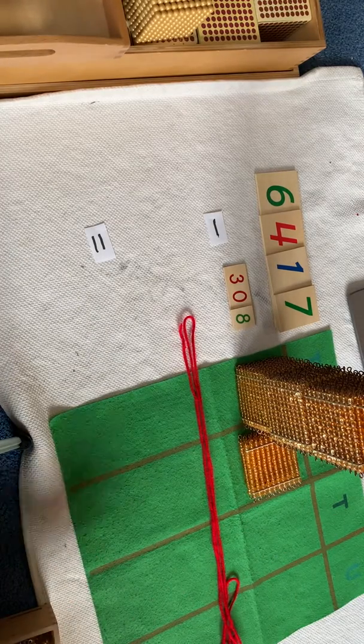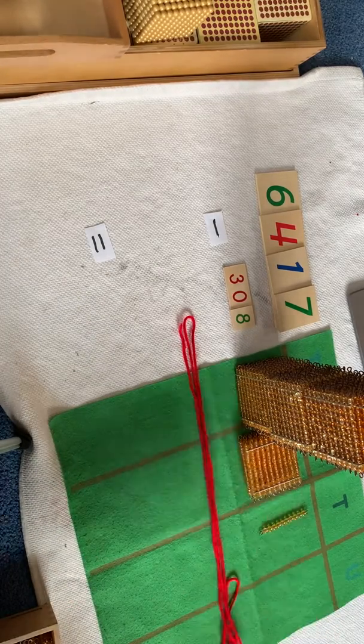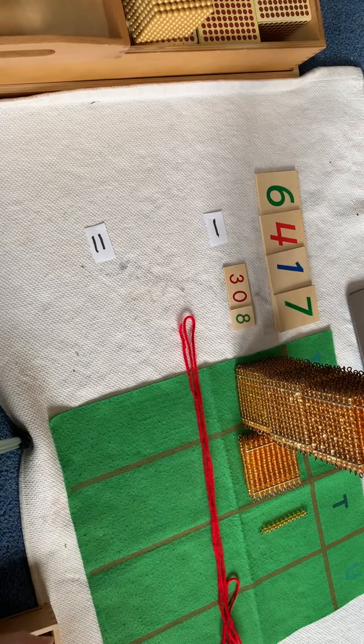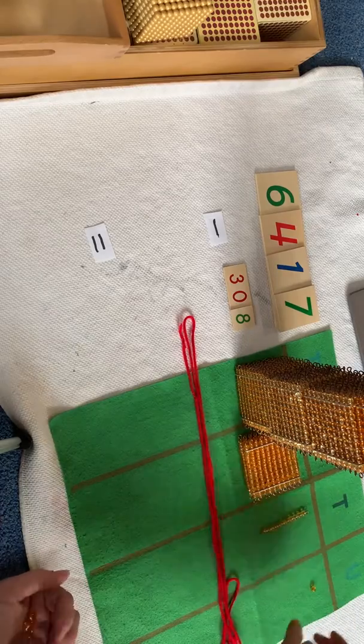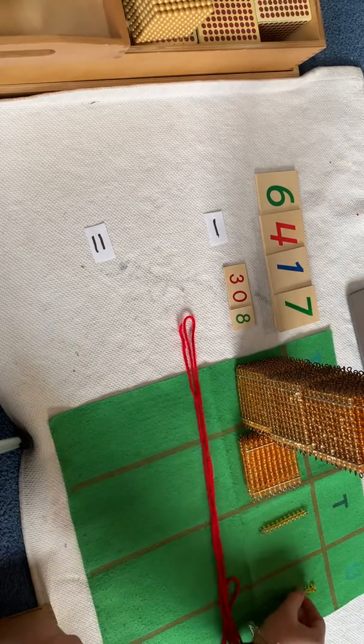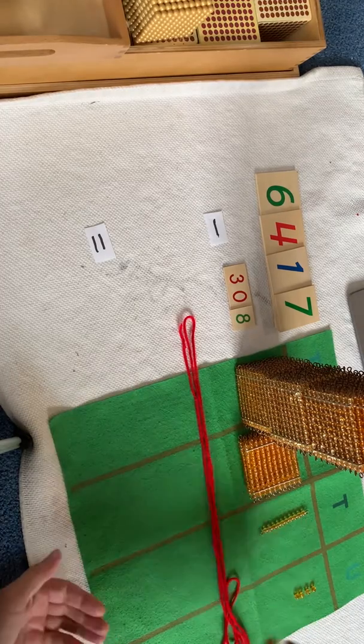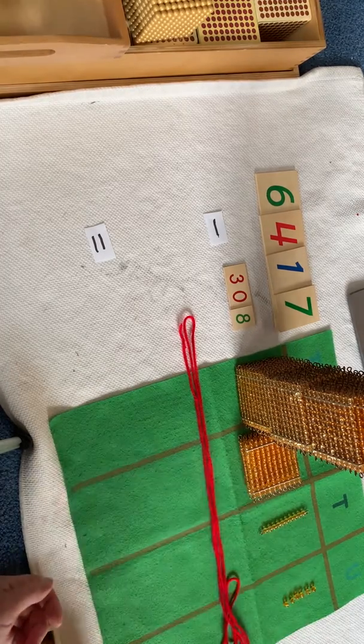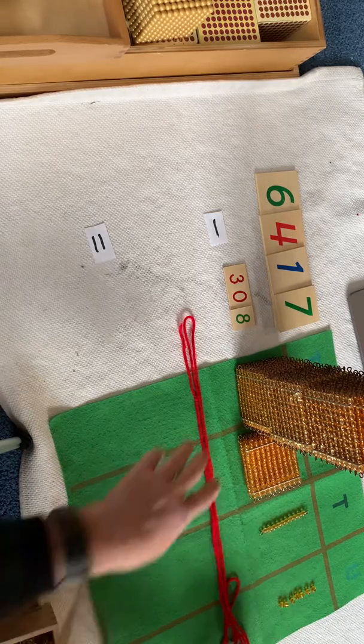And now we need seventeen. Ten. Well, we know our teens are made from tens and units. So there's a ten. And now we need seven units. One, two, three, four, five, six, seven.